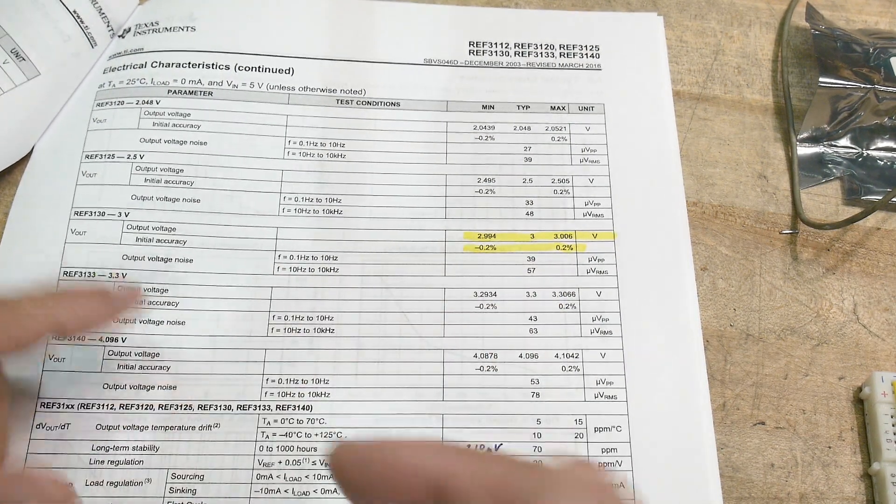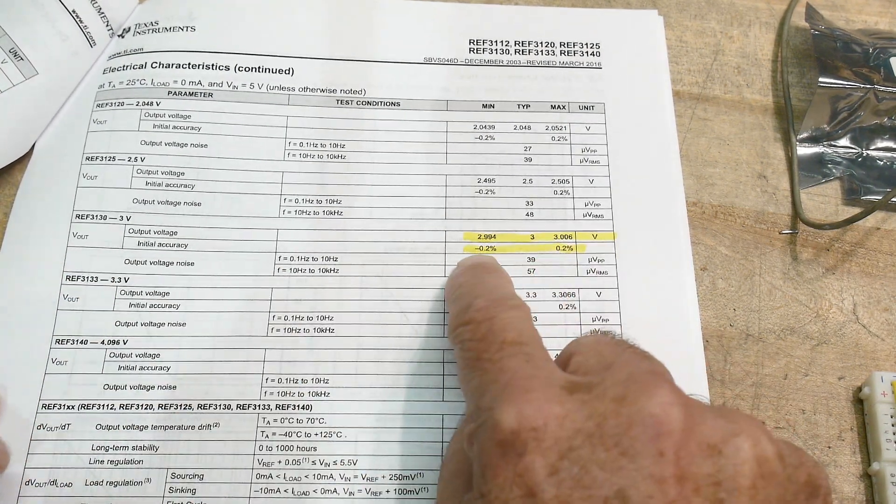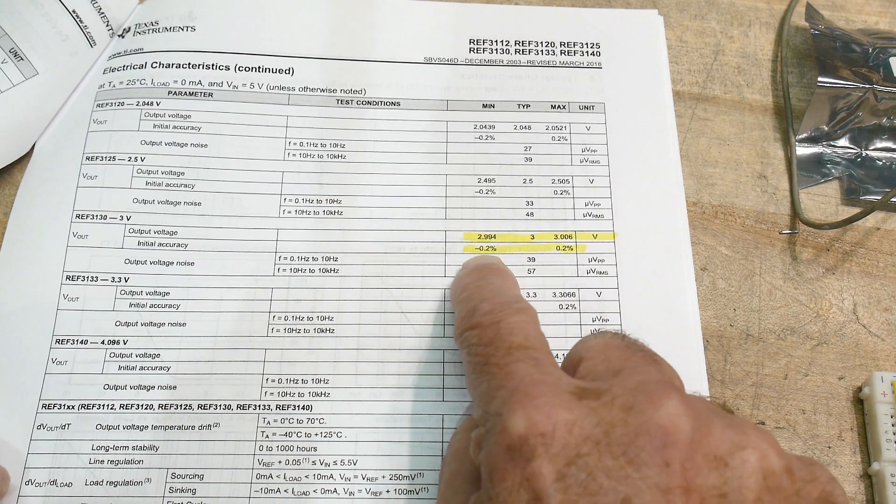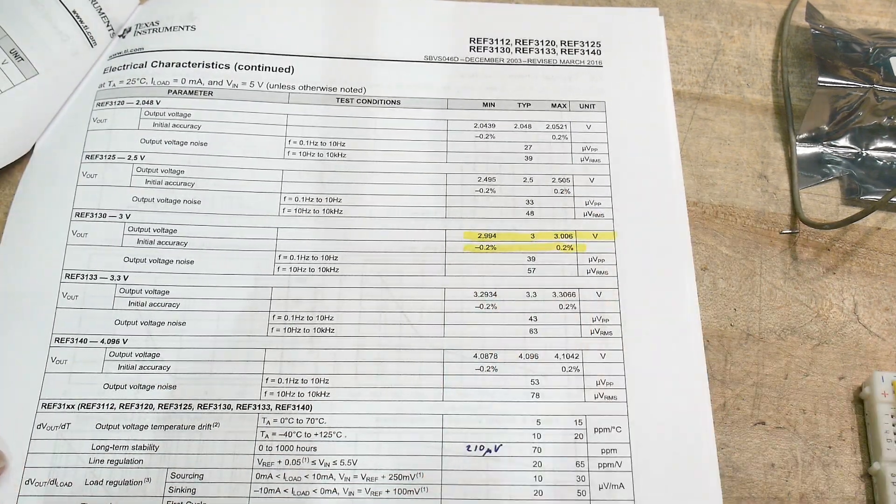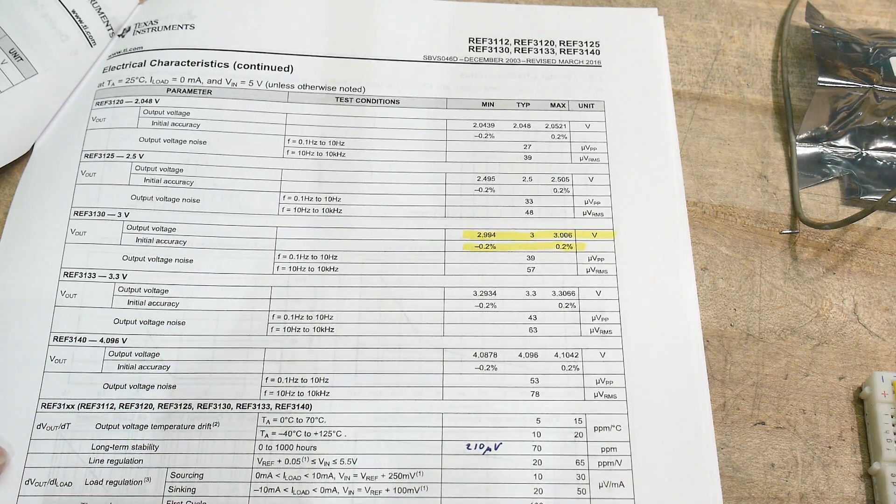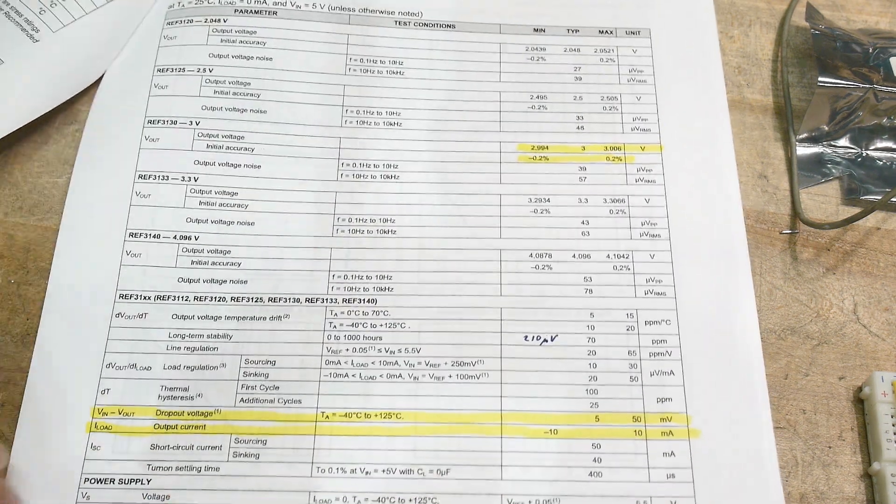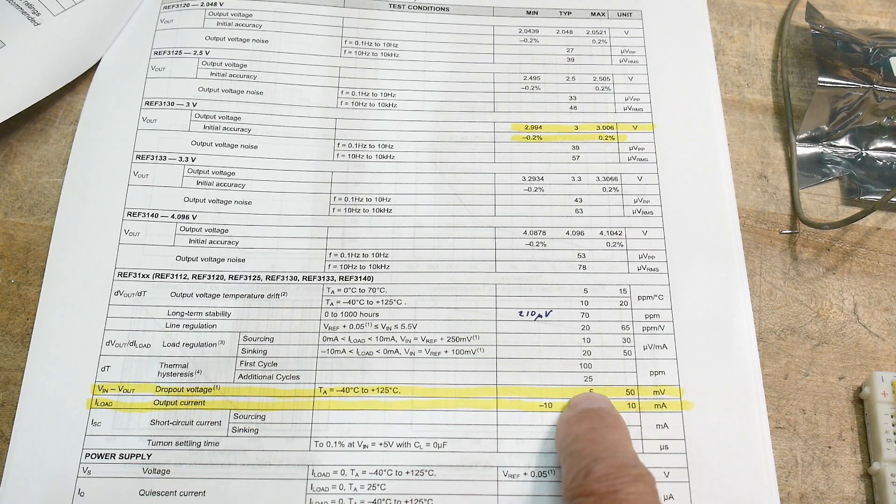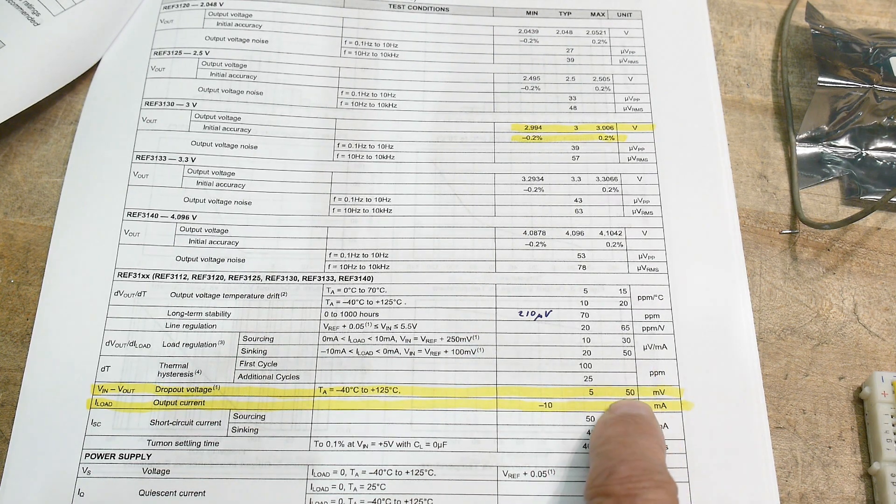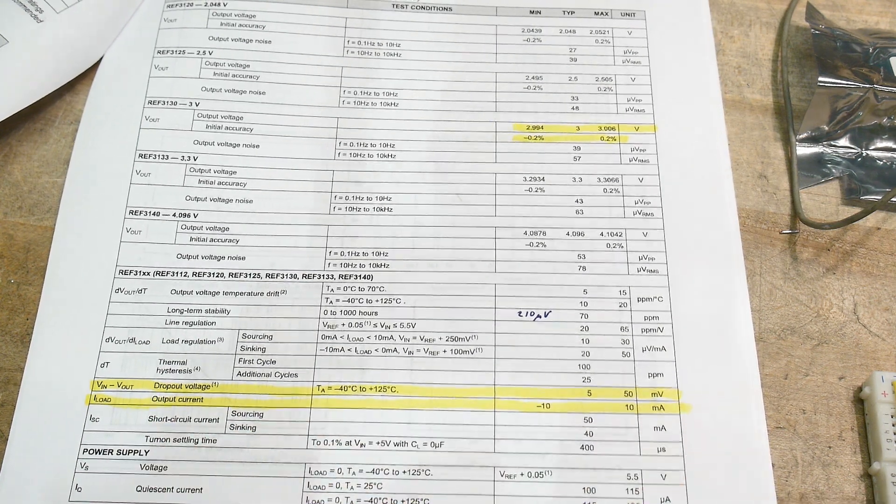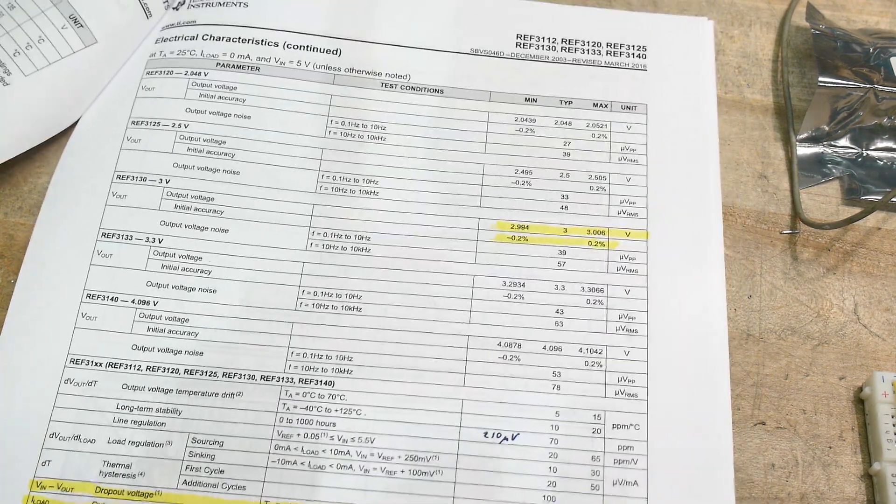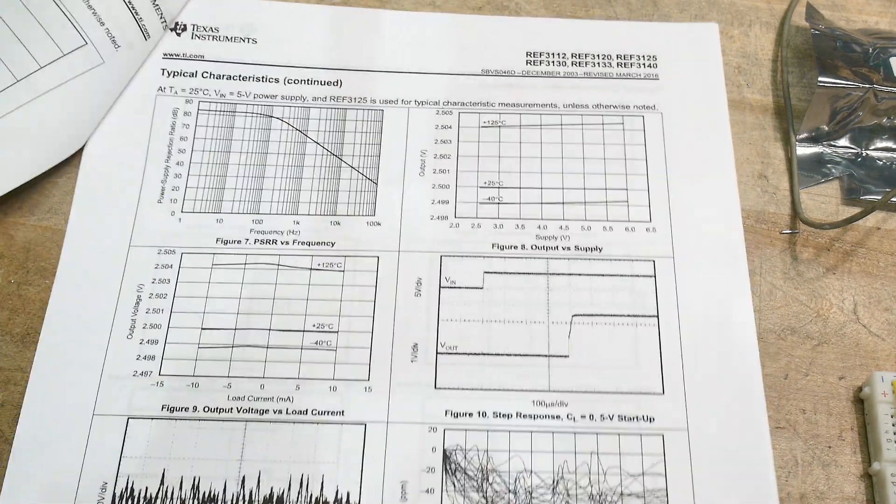This is the three volt part and out of the box, it's guaranteed to 0.2%, plus minus 0.2%, initial voltage. That's pretty cool. That's good enough for a lot of applications. Down here is the dropout voltage again, typically five millivolts, but maximum of 50. Output current was plus minus 10 milliamps. Push pull. That's kind of weird.